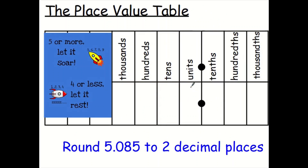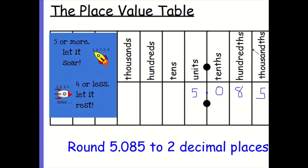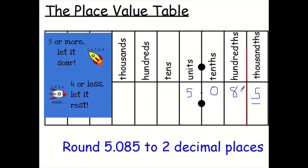Round 5.085 to two decimal places. I want two things after the decimal point, so I put my dotted line after two things. Does this number change this one? It's five or more, so it lets it soar up to 5.09. It's worth noting that just because that becomes a nine, it doesn't keep having a knock-on effect. It just stays as 5.09 — you only sort out your second decimal place.